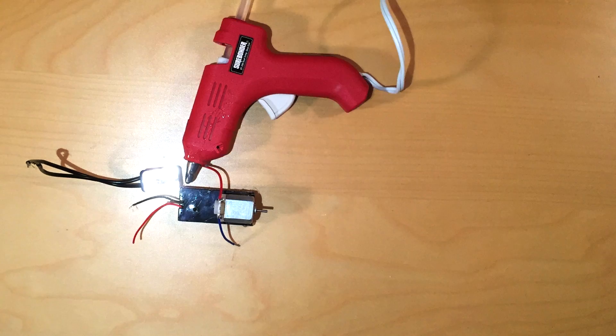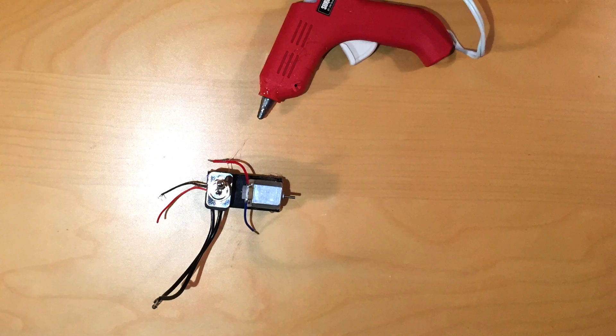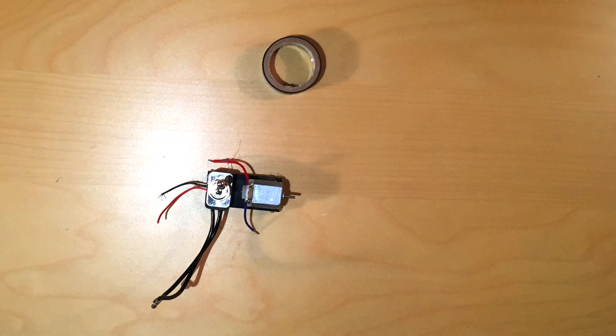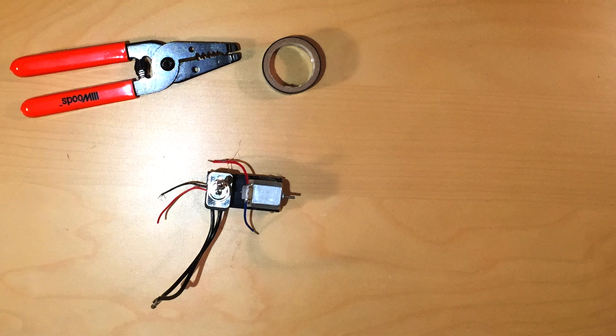Next, put some hot glue on the other end of the battery pack and secure the toggle switch. I placed it sideways to save some space. Now that the main components are attached, you can start wiring. Make sure that the batteries are not in the device.